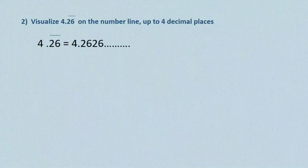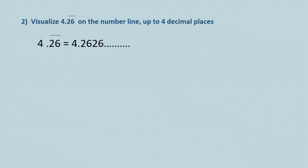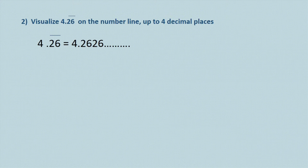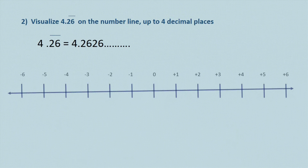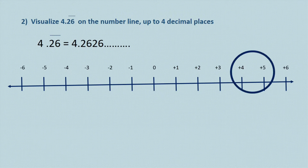The second question is: visualize 4.26 bar on the number line up to 4 decimal places. The given number 4.26 bar can be written as 4.2626 and so on. Since it is up to 4 decimal places, we are going to locate 4.2626 on the number line. We are sure that 4.2626 lies between 4 and 5, so we focus the magnifying glass between 4 and 5.